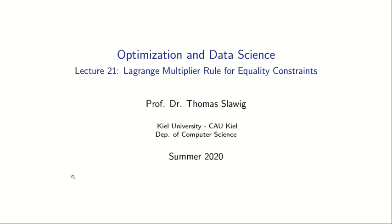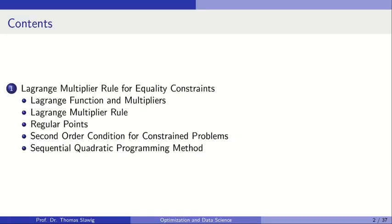Hello and welcome to the 21st lecture in the course Optimization and Data Science. The topic is the Lagrange multiplier rule for equality constraints. The Lagrange multiplier rule is the necessary optimality condition for constrained problems. We consider it here first for equality constraints only, and therefore we need to define the Lagrange function and Lagrange multipliers, then go to the Lagrange multiplier rule which is the theoretical result.